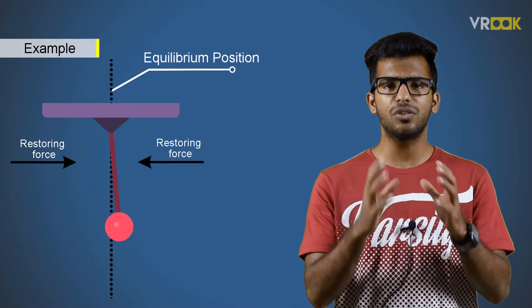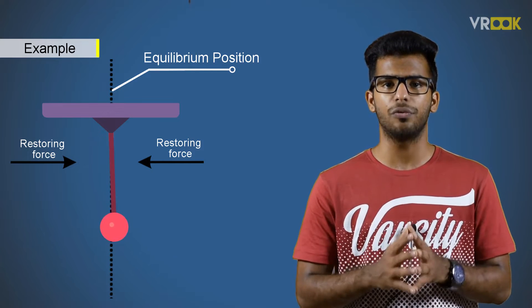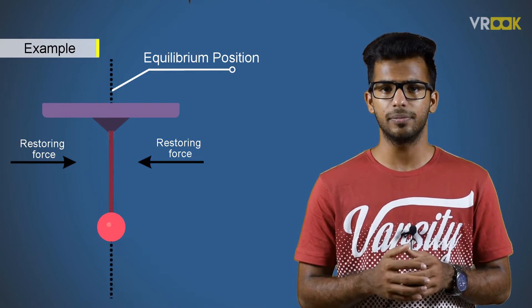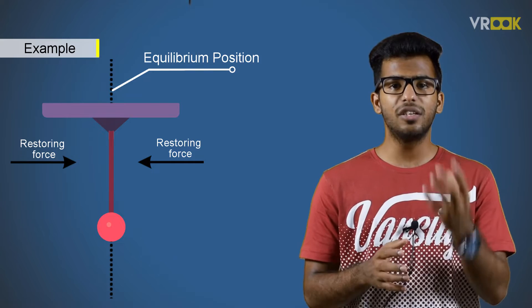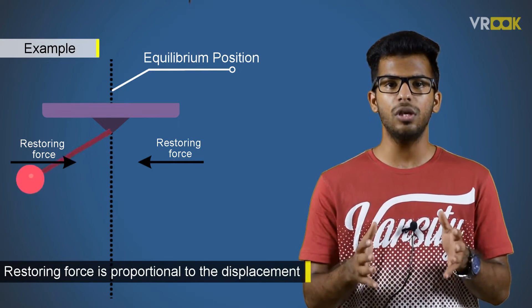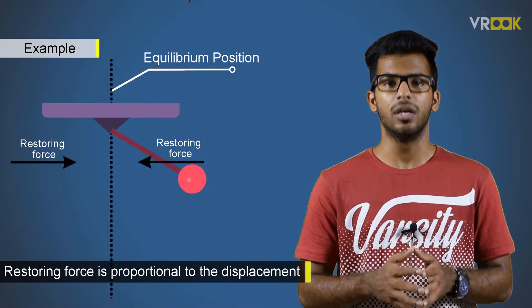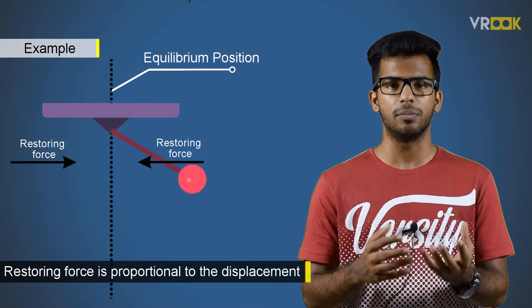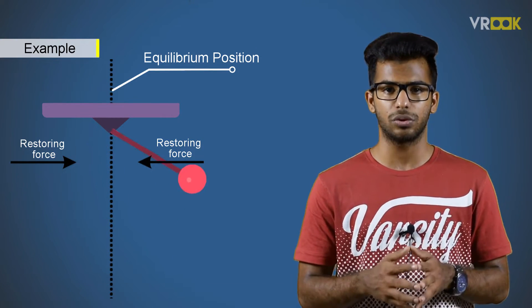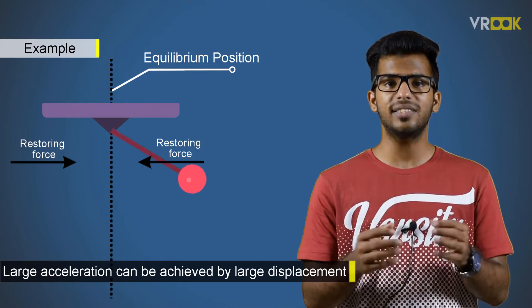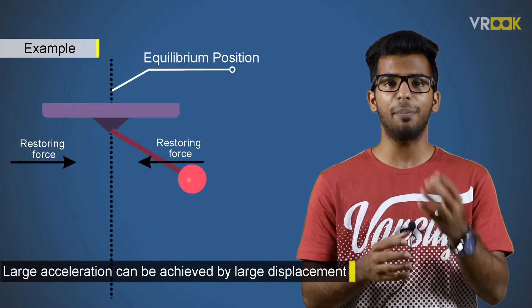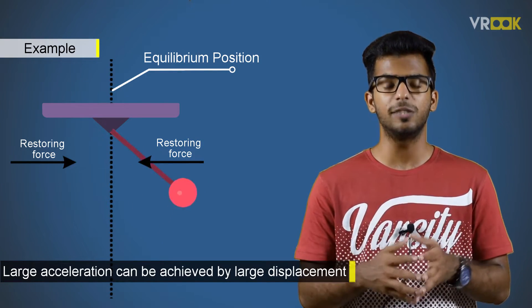The nature of the restoring force is the cause of natural frequency. We know that the restoring force is proportional to the displacement, that is, the disturbance. The more you displace the system, the more will be the restoring force. This means large acceleration of the body can be achieved by larger displacement.